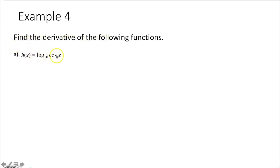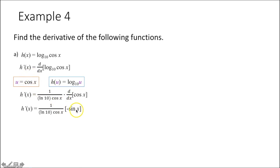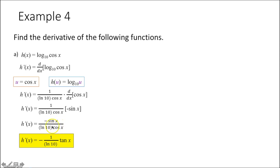Example 4: find the derivative of log base 10 of cos(x). We have a function within a function. Let u = cos(x), outer function = log base 10 of u. Derivative of log base 10 of u is 1 over (ln(10) times cos(x)). By the chain rule, multiply by the derivative of cos(x), which is -sin(x). That goes in the numerator. We can simplify: -sin(x) over cos(x) is -tan(x), giving -tan(x) over ln(10).